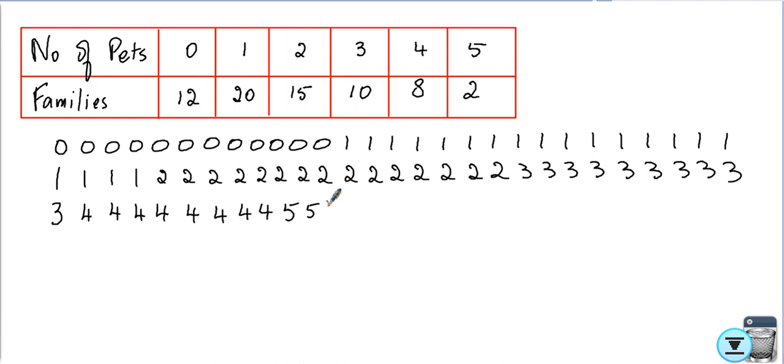Those were all my replies. So how many students did I survey? If I had to find the number of students surveyed, I have to add all these. The number of students surveyed, which we're going to call n, is 12 plus 20 plus 15 plus 10 plus 8 plus 2, which is the sum of all the families, which gives 32, 37, 47, 57, 67. So I surveyed 67 students or families.